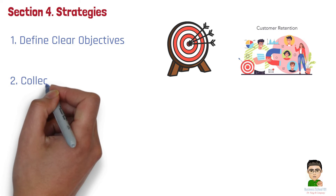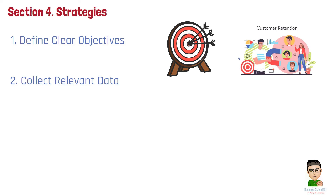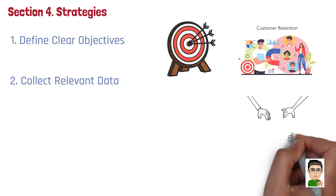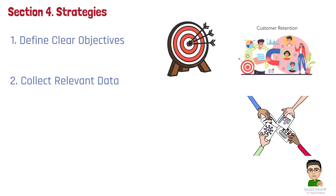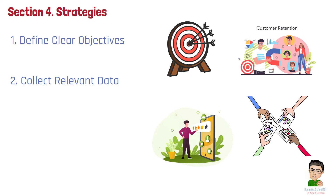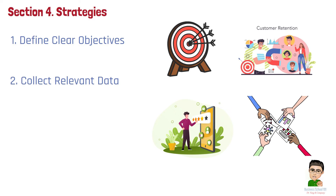Step 2: Collect relevant data. Gather data from various sources, including customer interactions, sales transactions, social media, and internal operations. The more relevant and comprehensive your data, the more accurate your analysis will be. For example, a retail business might collect data from point-of-sale systems, customer surveys, and online reviews to get a full picture of customer preferences and behavior.